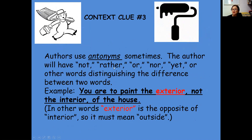Number three: the author might use an antonym. They might have 'not,' 'rather,' 'nor,' or 'yet' to distinguish the difference between words. For example: you're to paint the exterior, not the interior, of the house. So that lets you know that 'exterior' must mean the outside of the house.